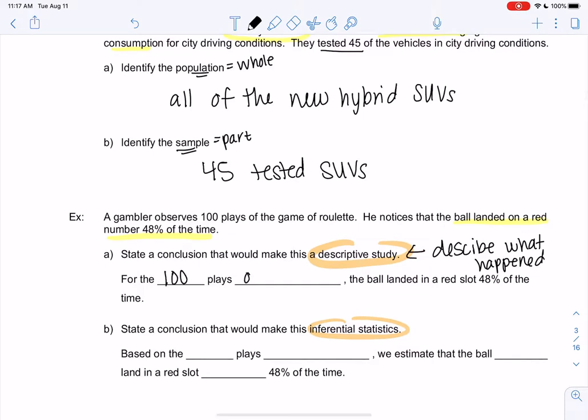So for the 100 plays of roulette, or let's say the 100 plays observed, because he observed 100 plays. So we're only describing those 100 plays. Nothing more, nothing less. The ball landed in the red slot 48% of the time. We're just describing what the gambler witnessed.